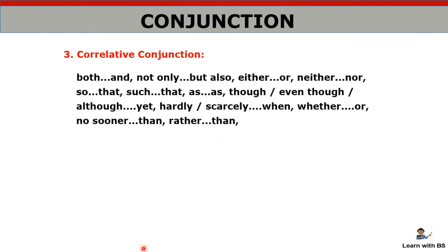One more type is correlative conjunction — which appears in two separate parts of a sentence: either...or, neither...nor, not only...but also, rather than, no sooner...than. For example: 'No sooner did she come than her dog ran away.' One part has 'no sooner' and the other has 'than' — these are correlative conjunctions.